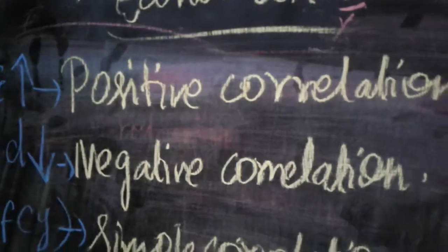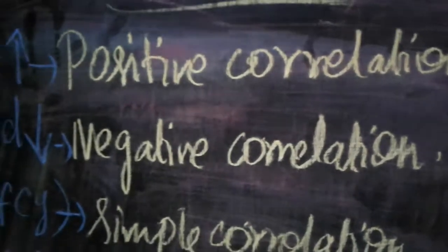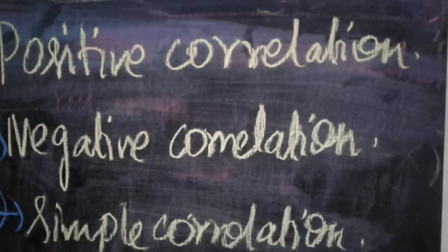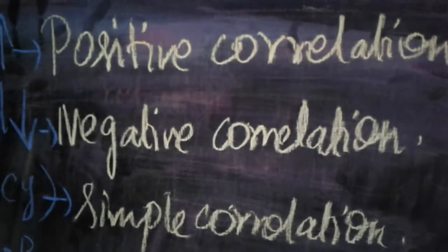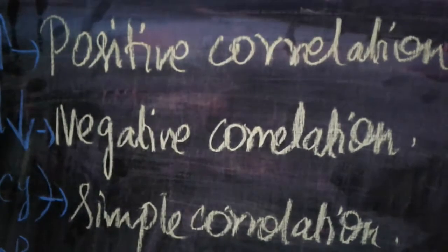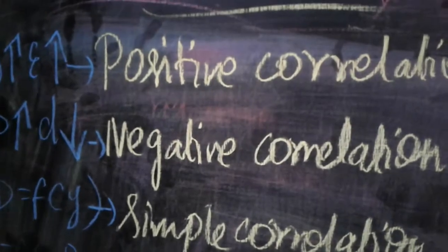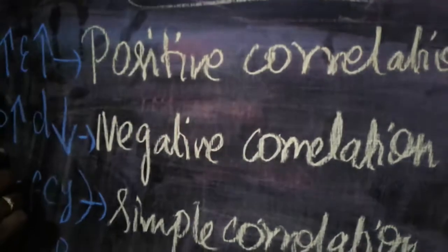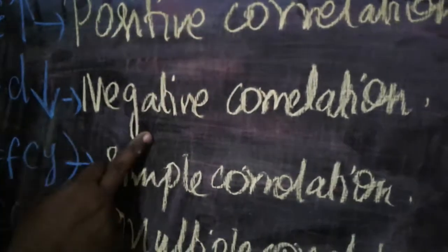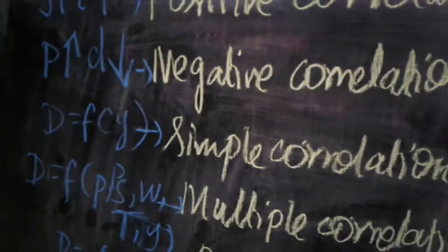Negative correlation: if one variable increases, another variable goes down — we call it a negative correlation. For example, when price increases, your purchase of onion, tomato, or whatever will be less. So when price increases, demand will fall. One variable increases and another comes down — that is a negative correlation.